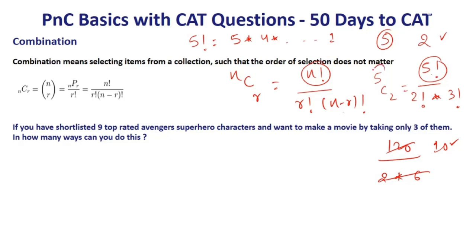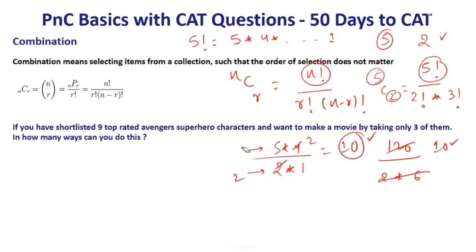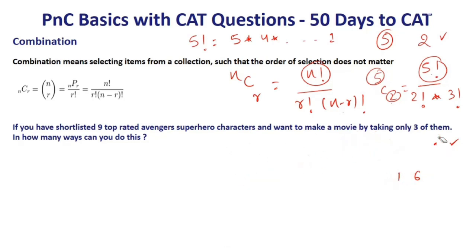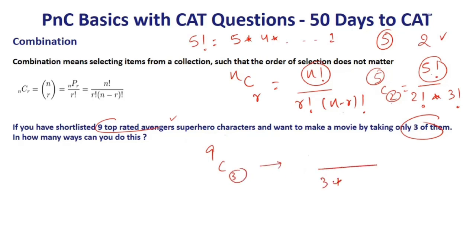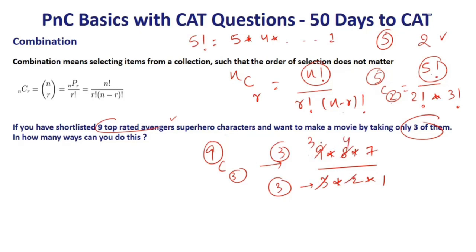There is a simpler way to calculate this. For 5C2, write the denominator in decreasing order: 2 into 1. Then write the numerator also in decreasing order with the same count of numbers: 5 into 4. So the answer is 10. Similarly for 9C3: denominator is 3 into 2 into 1, numerator is 9 into 8 into 7, giving 84. So if you shortlist 9 Avenger characters and want to make a movie with 3, the number of ways is 9C3 = 84.